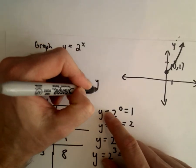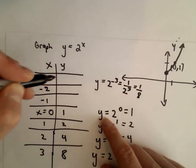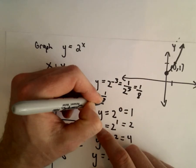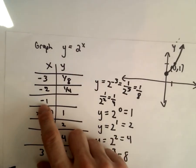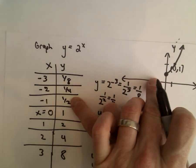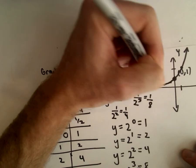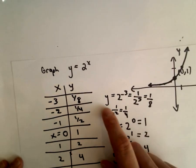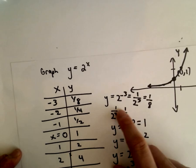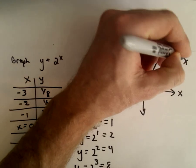If we plug in X equals negative 3, we get Y equals 2 to the negative 3rd, which is 1 over 2 to the 3rd, which is 1 eighth. At X equals negative 2, we get 2 to the negative 2nd, which is 1 over 2 squared, which is a fourth. At X equals negative 1, we get 2 to the negative 1st, which is 1 half. As we move left, Y values go from 1 half to a fourth to an eighth — getting smaller and smaller. Since Y is always 1 over 2 to a positive number, it's always positive, so it never quite hits the X-axis.